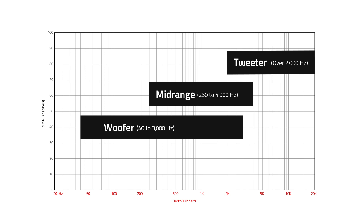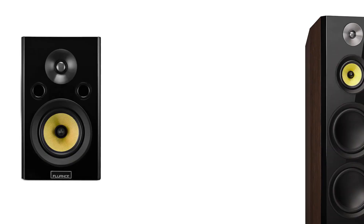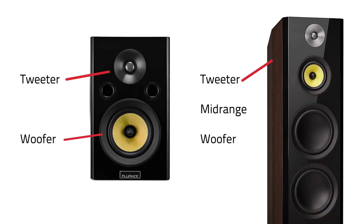The most common configuration in modern speakers are two-way and three-way configurations, which indicate the number of drivers that a speaker has. A two-way speaker has a woofer and tweeter, whereas a three-way speaker has a woofer, tweeter, and mid-range driver.